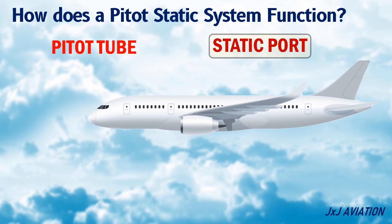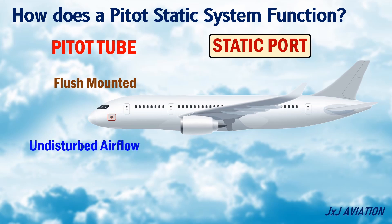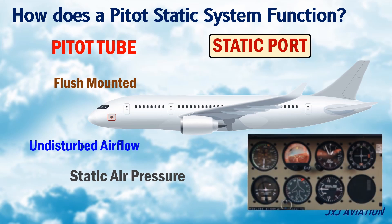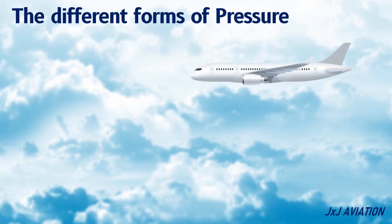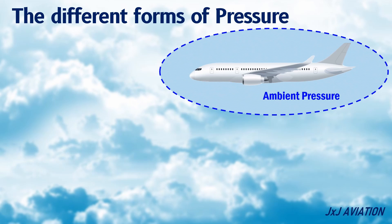The static port. These are vents which are flush mounted on the fuselage. They are located in places of undisturbed air flow. The static ports are used to measure the static air pressure. The ambient air pressure, or the stationary air pressure, is called the static pressure. The static port measures this static pressure.